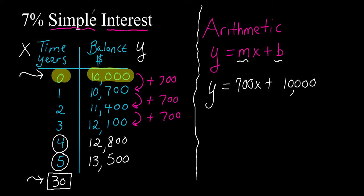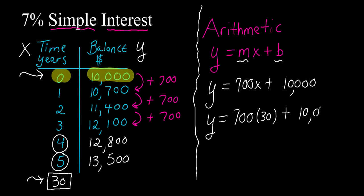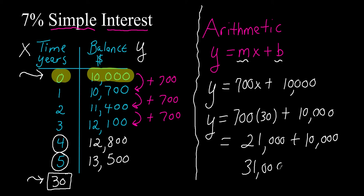X represents time and y represents balance. I'll replace x with thirty, since I'm looking for the balance at year thirty: y equals seven hundred times thirty plus ten thousand. Seven hundred times thirty is twenty-one thousand, plus ten thousand gives us thirty-one thousand. So my balance at year thirty is thirty-one thousand dollars.